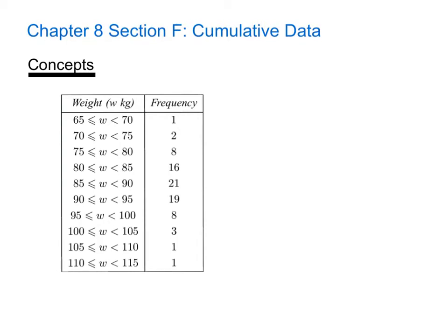In this video, we'll be looking at Chapter 8, Section F on Cumulative Data. Take a look at the frequency table below. Notice that the data values, which in this case are weights, are given in groups or class intervals. And so we don't actually know the specific data values.